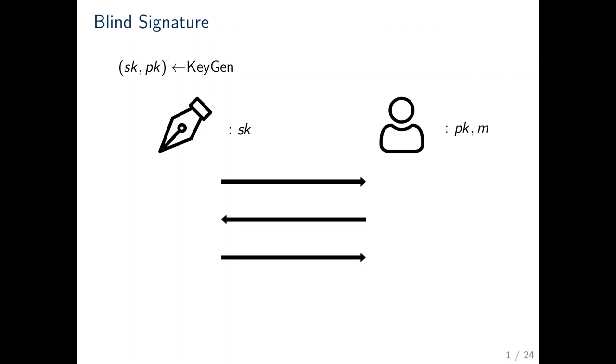In this work, we considered a special case where the interaction consists of three moves. At the end of the interaction, the user learns a signature sigma on a message of its own choice and the signer is supposed to learn nothing.